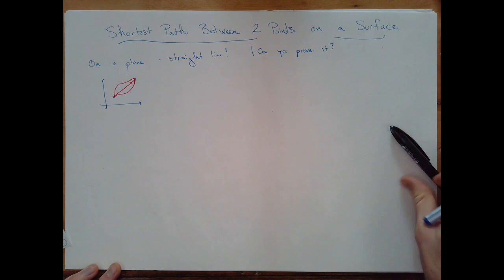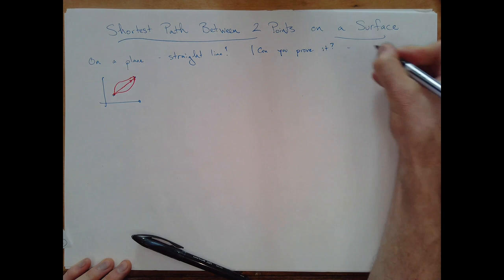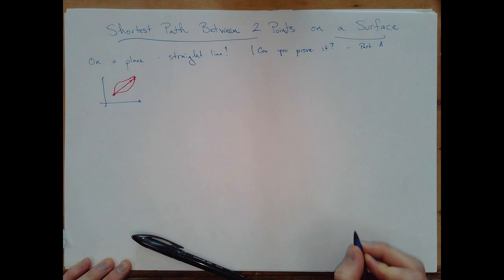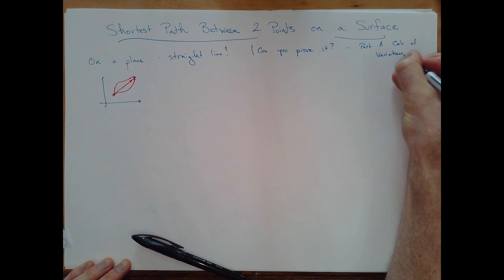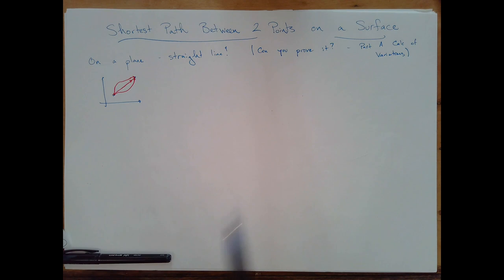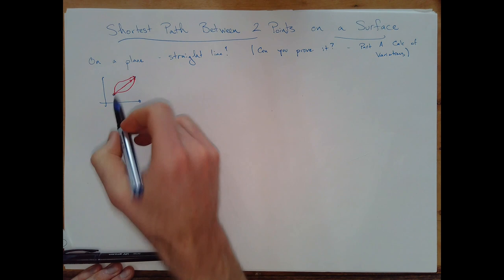There is machinery for proving that. If you're interested, the course calculus of variations, which is a Part A short option and then carries on in some other courses later, develops the machinery to answer that. What we're really interested in is the less trivial case: a plane is a surface, but it's a very simple surface.